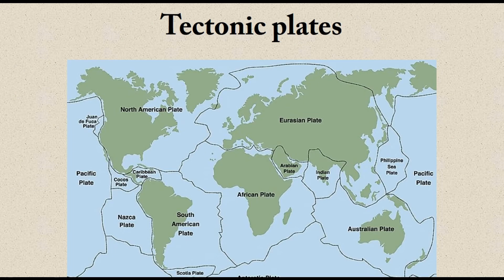Here is a map showing the major tectonic plates on Earth — the North American plate, Eurasian plate, African plate, Australian plate, and others. The entire area of the earth's surface is divided into multiple plates. These plates are in continuous motion from one place to another, but it is very slow — it may take hundreds of years to move just one or two meters.